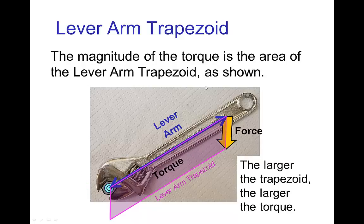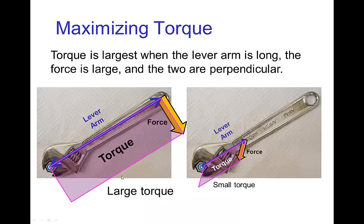The magnitude of the torque depends on the length of the lever arm, the strength of the force, and the angle between them. We can picture the size of the torque by drawing a lever arm trapezoid — a trapezoid with the lever arm on one side and something indicating the magnitude of the force on the other side. The larger the area of this trapezoid, the larger the torque.